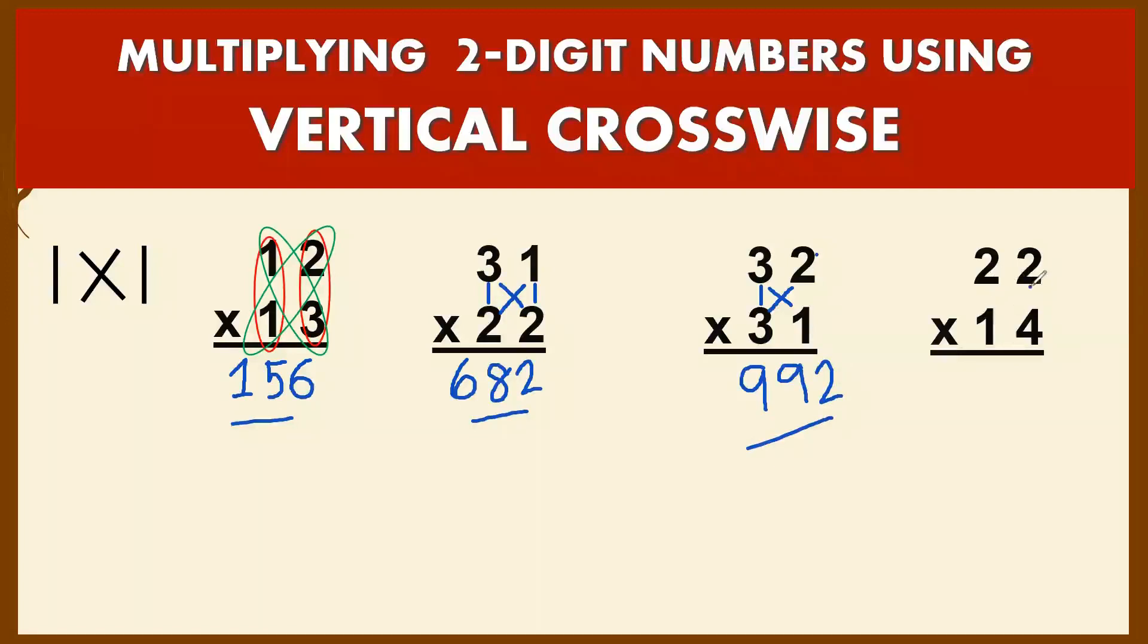Last example: 22 times 14. Column 1 first, 2 times 1 is 2. Product of your crosswise: 2 times 4 is 8, then 2 times 1 is 2. 8 plus 2 gives you 10, so you bring down 0 and carry 1. 2 times 1 is 2, plus 1 you get 3. Your final answer is 308.